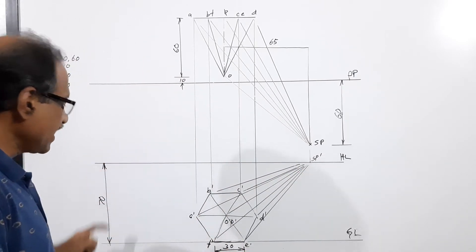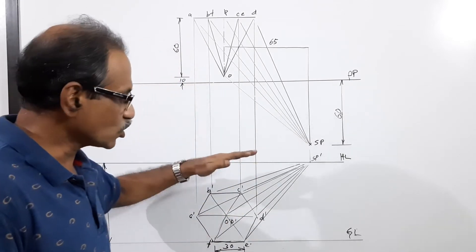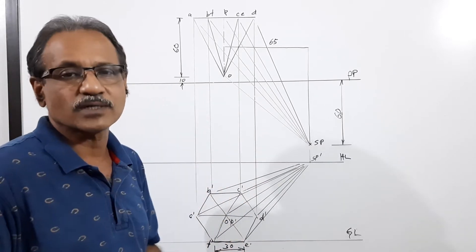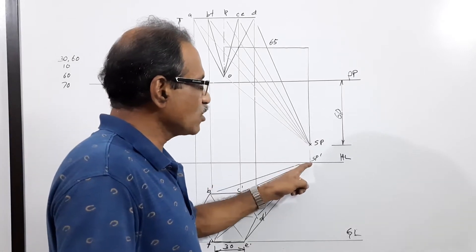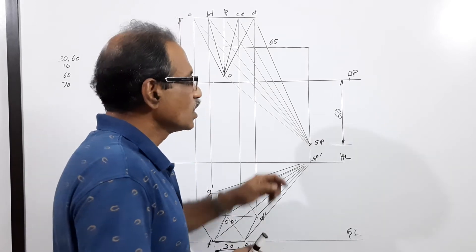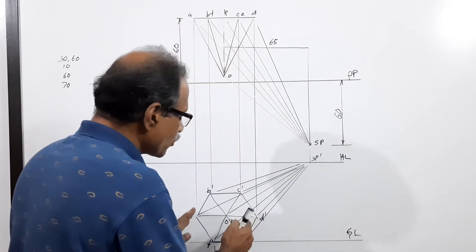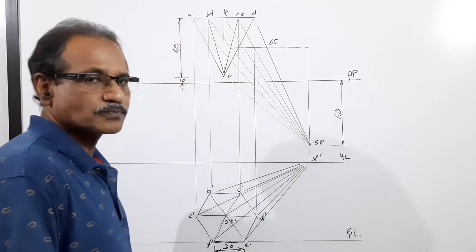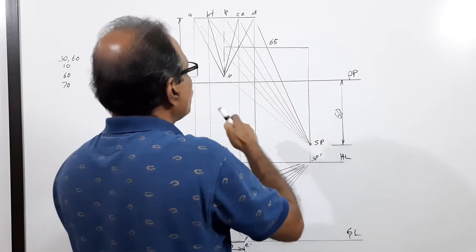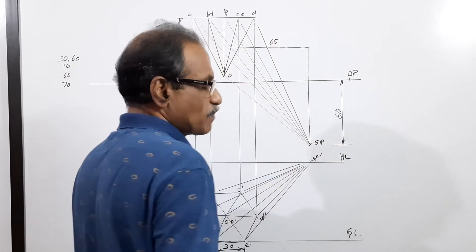On the center plane, 60 mm in front of the picture plane, locate SP — the station point. Draw HL at any convenient distance below PP, preferably below the station point. Then draw GL 70 mm below HL. Now project SP down to get SP-dash. Join all points of the plan to SP — there are six points, so draw six lines to SP.